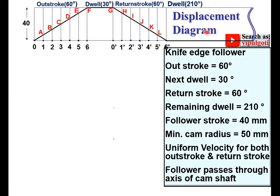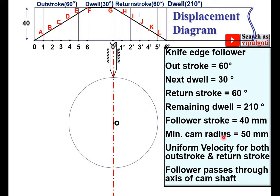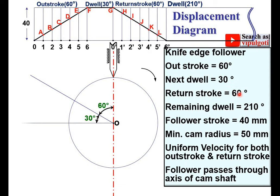Now let's start the cam profile. First, take any point and give the name O. Draw a center line passing through O — this is the center line of the cam. Draw the circle with minimum cam radius of 50 mm using a compass. This symbol represents the knife-edge follower. The cam rotation direction is not given, so assume it is clockwise; therefore the angles must be measured in the opposite — anticlockwise — direction. Starting from the reference line: 60 degrees for outstroke, then 30 degrees, then 60 degrees, and the remaining 210 degrees for the dwell.